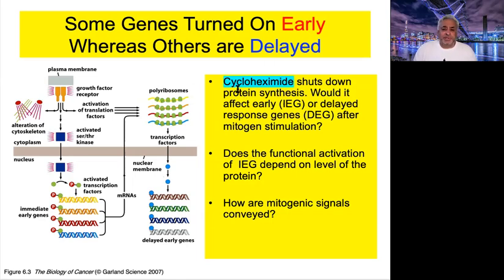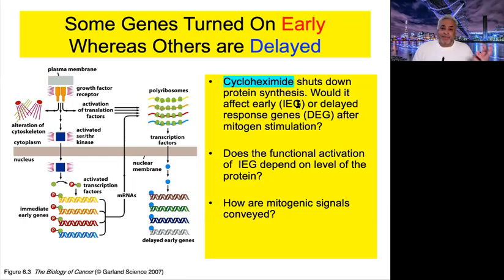Experiments using cycloheximide, which binds to translation factors EF1 and EF2 on the small ribosomal subunit to inhibit de novo protein synthesis, showed that even when all new protein synthesis is shut down, immediate early genes (IEGs) are still activated. This means the protein machinery must already be sitting in a proximal location, ready to go — proteins that are pre-made and waiting to be activated by a change in shape or by binding to other proteins, rather than being newly made by ribosomes.